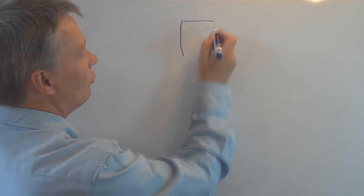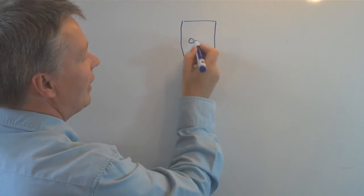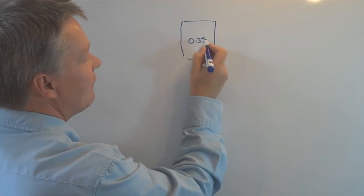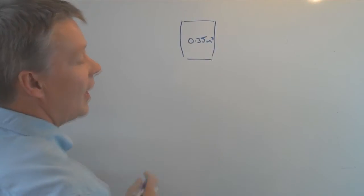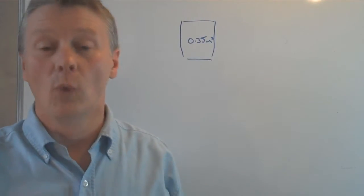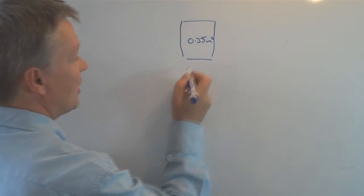Let's say, for instance, we have a typical word problem. A rectangle where the area is 0.35 meters squared, and we know one of the dimensions, which in this particular case is 0.5.